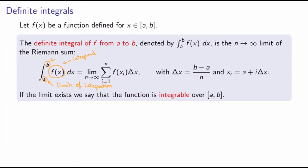You should note that this symbol — this elongated S, the integral sign — is the same one we used before when talking about antiderivatives or indefinite integrals. There's a reason for that, as we'll see when we study the fundamental theorem of calculus. But when you have a and b, the limits of integration, it means a totally different thing: the definite integral, or the limit of the Riemann sum. If you don't have limits of integration, it means the indefinite integral, which is the general antiderivative of the function.